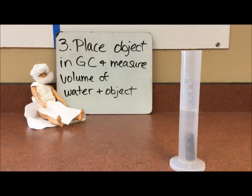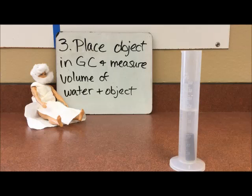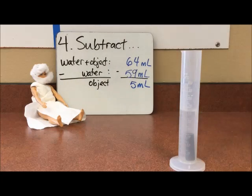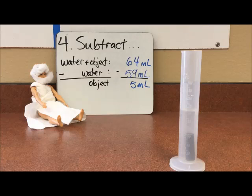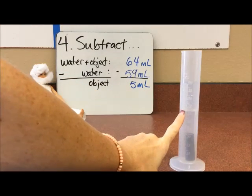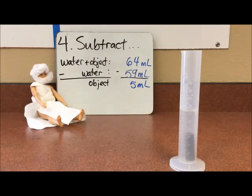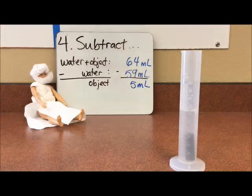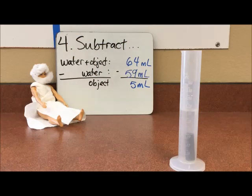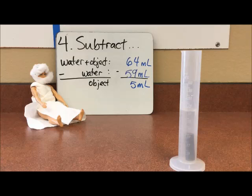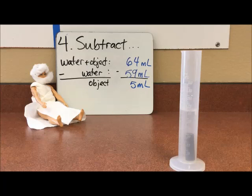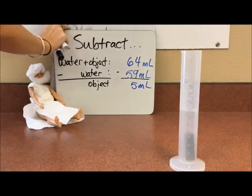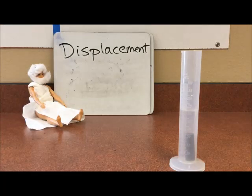So the last step that we have to do is a little bit of subtraction—thank Archimedes for that. We need to take the volume of the water plus the object, which right now is at 64, and then subtract the initial amount of water, because we don't want to know the water plus the object—we want to know just how much space the object is taking up. So we're going to subtract the 59 milliliters of the water and we are going to record on our data table that the object has a volume of five milliliters. That is how we find the volume by displacement. Thanks Archimedes.